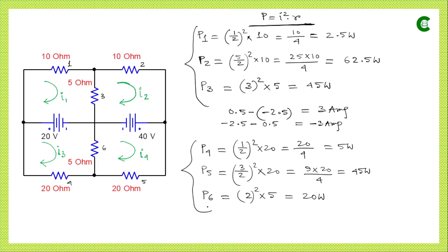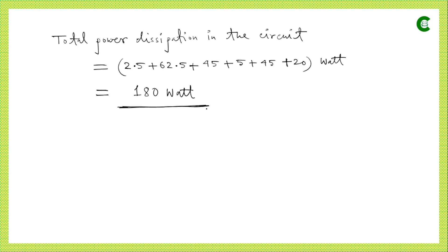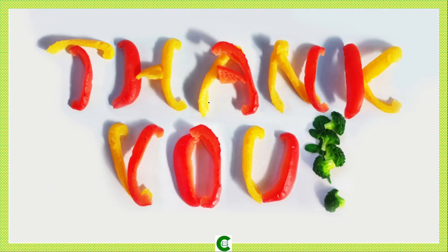P4 and P5 are found by the same logic. For P6, the net current through the shared resistor between loops 3 and 4: i3 − i4 = −0.5 − 1.5 = −2 A, or from loop 4: i4 − i3 = 1.5 − (−0.5) = 2 A — magnitude is 2 A in both cases. So P6 = (2)² × 5 = 20 W. The total power dissipation in the given electrical circuit is 180 W.